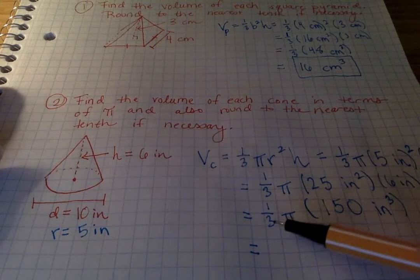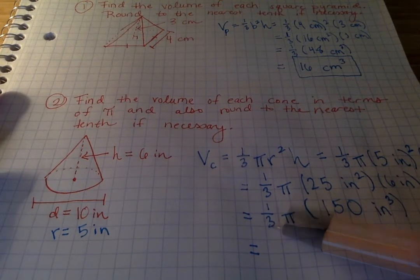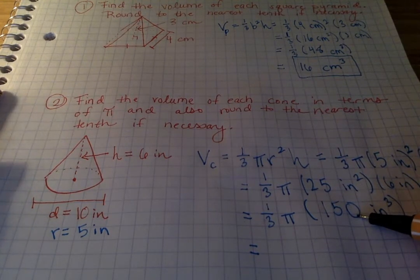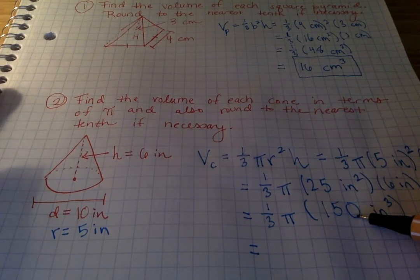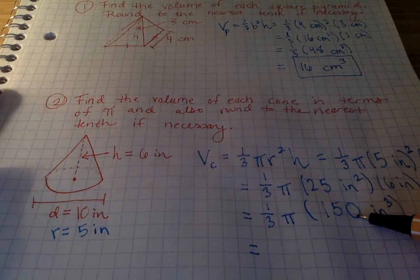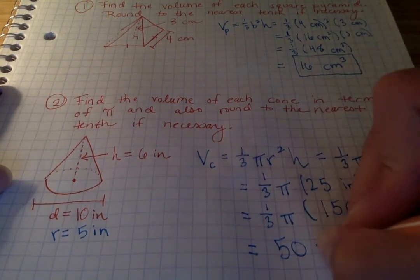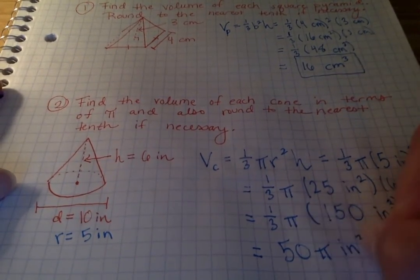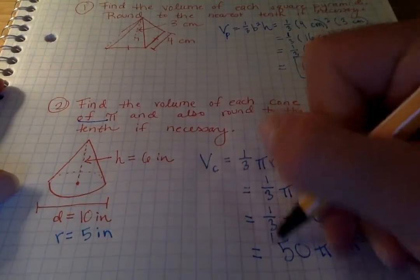So I can do three goes into a hundred and twenty, forty times, and then I have thirty left over, and it goes into that ten times. So then I have forty plus ten or fifty, so I have fifty pi inches cubed, and it says in terms of pi, that means I leave my pi in my answer.